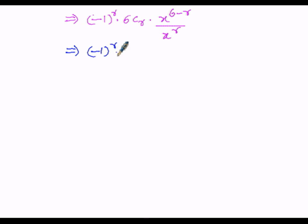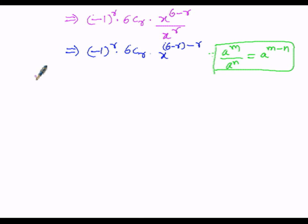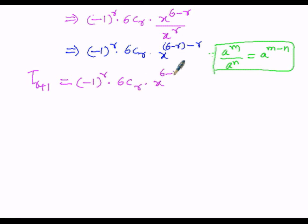Since the bases are equal, we apply the identity a^m / a^n = a^(m−n). With m = (6−r) and n = r, we write x^(6−r−r). Therefore T(r+1) = (−1)^r · 6Cr · x^(6−2r). To find the constant term, we set the power of x equal to zero: 6 − 2r = 0.